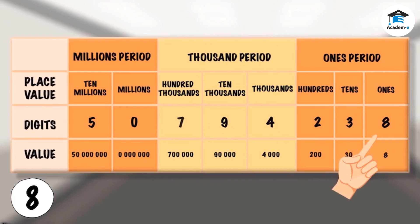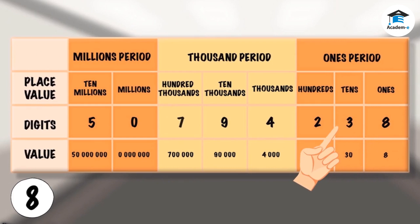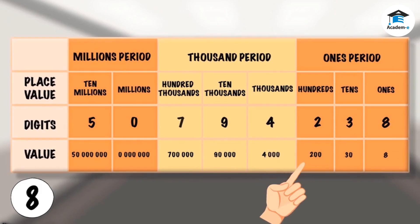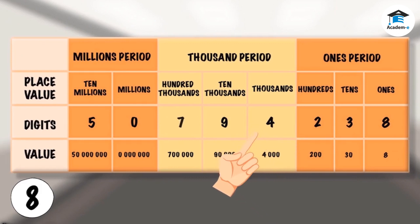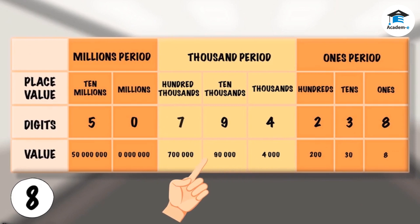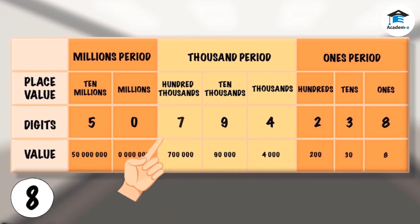8 is in the ones place, and the value of 8 is 8. The place value of 3 is tens, and the value of 3 is 30. The place value of 2 is hundreds, and the value of 2 is 200. The place value of 4 is thousands, and the value of 4 is 4,000. The place value of 9 is ten thousands, and the value of 9 is 90,000. The place value of 7 is hundred thousands, and the value of 7 is 700,000.